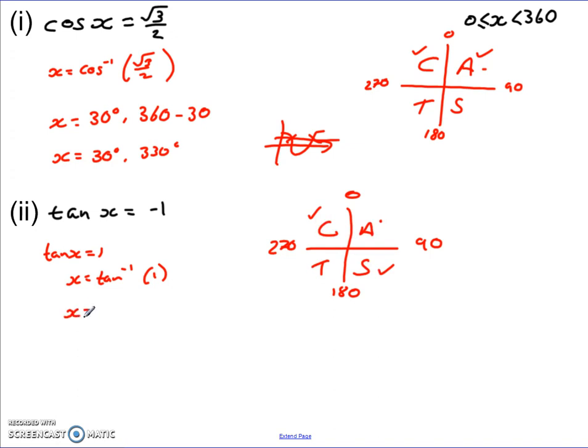So if we take tan minus 1 of 1, we figure out that x equals 45 degrees. We use this to then find the two solutions here. So we'd say find, so my two final solutions are 180 take away that 45 degrees, so that's your S region,